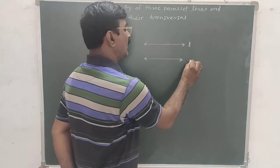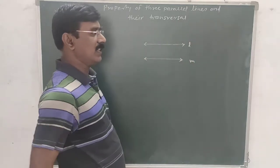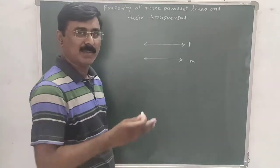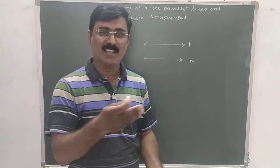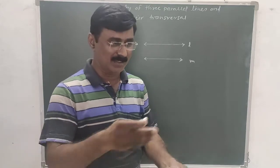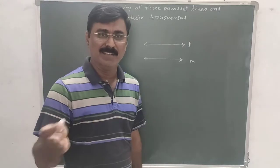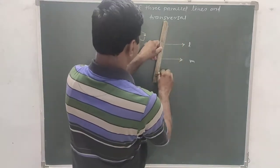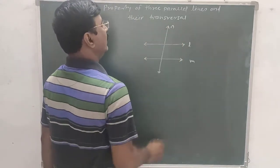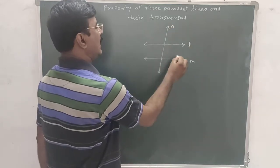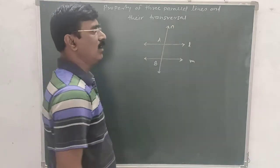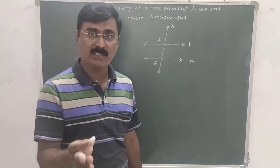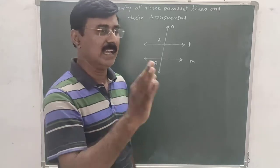What do you mean by transversal? If we draw a line — line L — that intersects lines L and M at points A and B, then that line is called a transversal. The definition of transversal: if a line intersects two or more lines at distinct points, then the line is called a transversal.